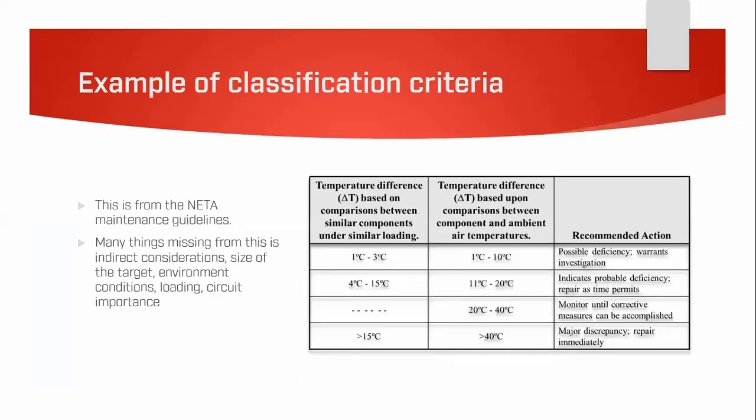This is an example from the National Electric Testing Association — an American classification criteria. Looking at it: 1–3°C delta T on a similar component is a possible deficiency, warrants investigation. 4–15°C indicates probable deficiency, repair as time permits. Anything above 15°C is a major discrepancy — repair immediately. Note that some things are missing from this standard, such as indirect considerations, target size, environmental conditions, loading, and circuit importance.